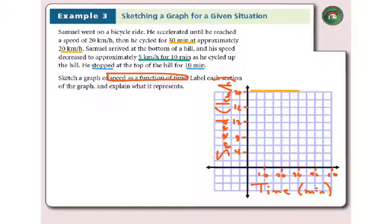Speed decreased to 5 kilometers an hour for the next 10 minutes. So speed, he put on the brakes. 5 kilometers an hour is right about there. For the next 10 minutes.